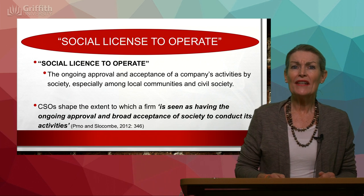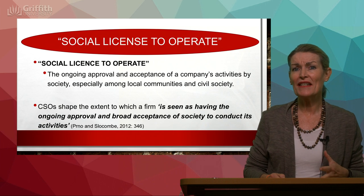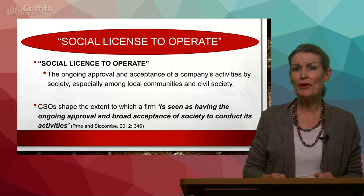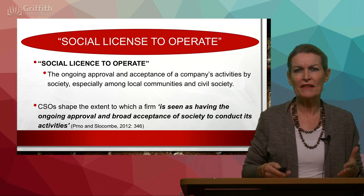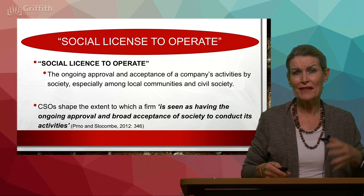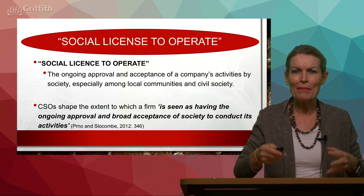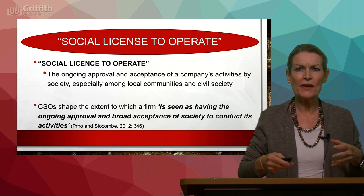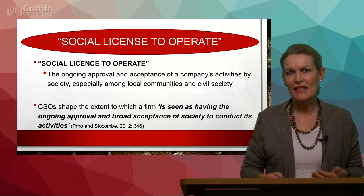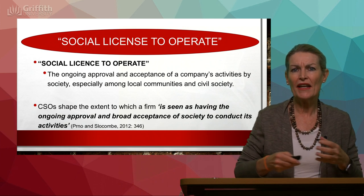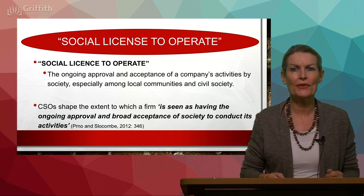The social license to operate is the approval and acceptance of a company's activities by society, especially among local communities and civil society. This is the balance of business and society — how much influence business has on society and society on business. That balance plays out and changes all the time, particularly depending on the politics happening.